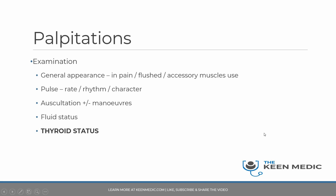A tip for station five: you can complete the top four examination elements in about two minutes, and also incorporate the thyroid status examination in another two minutes — that's about four minutes total, which is easily doable. In a palpitations scenario, you must examine thyroid status; you can't skip it in a station five scenario or you won't score the marks.